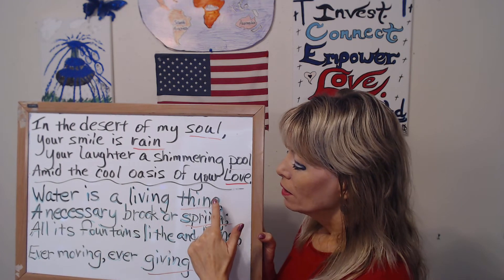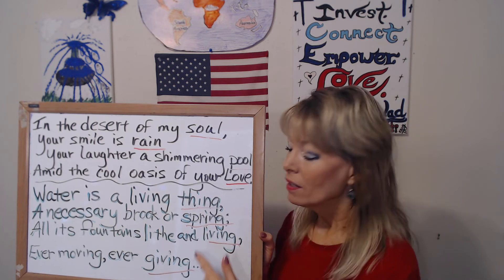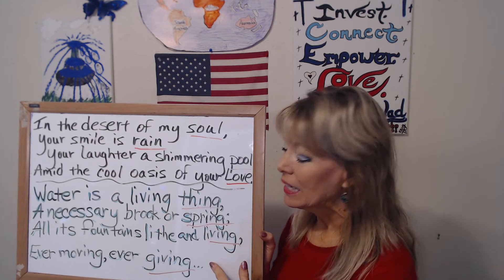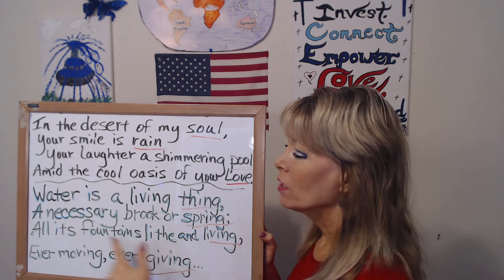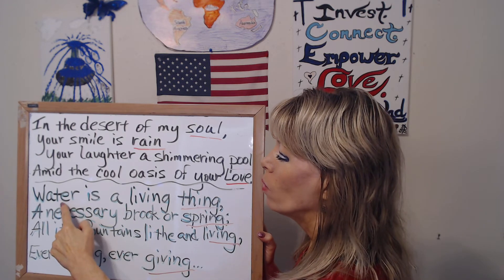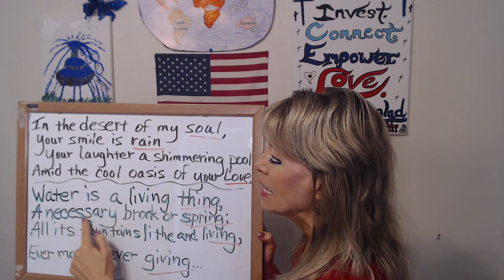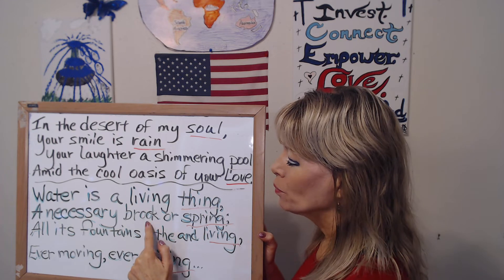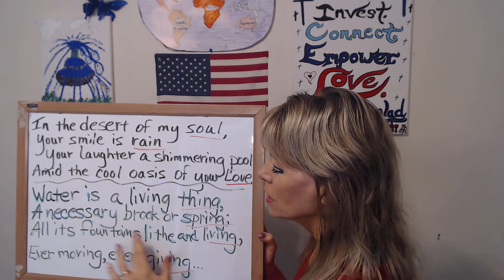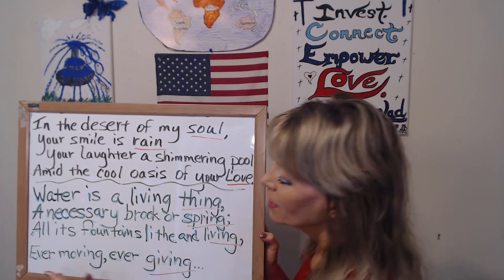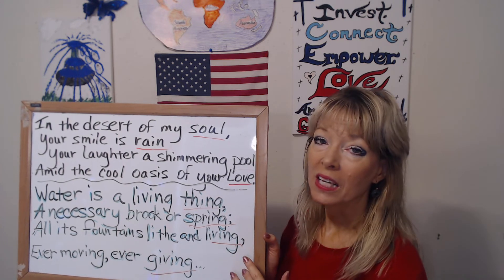All right. This is an excerpt, which means a part of the beginning of the poem I wrote called 'Water is a Living Thing.' Here we go: Water is a living thing. Unnecessary brook or spring. All its fountains, life and living. Ever moving, ever giving.